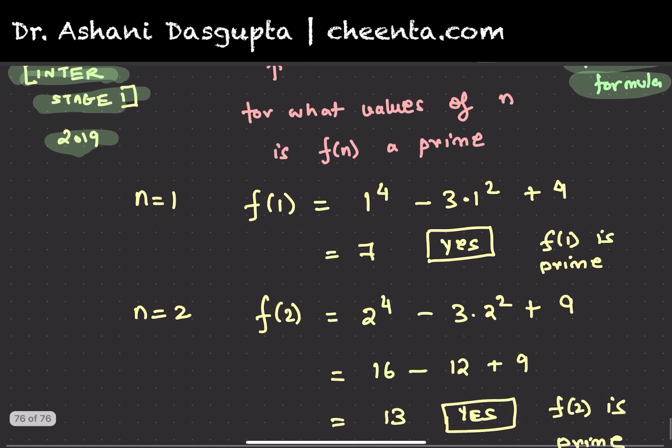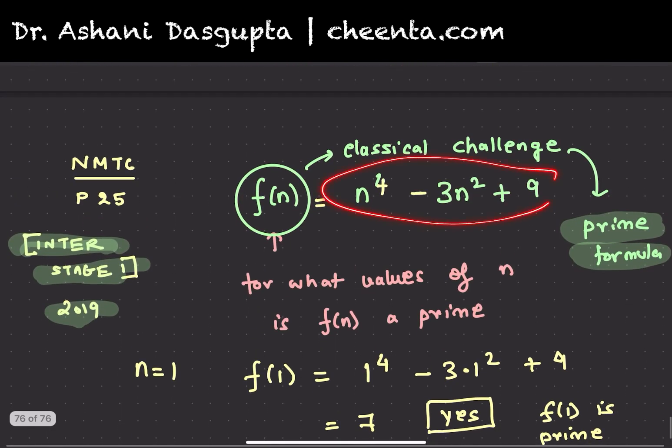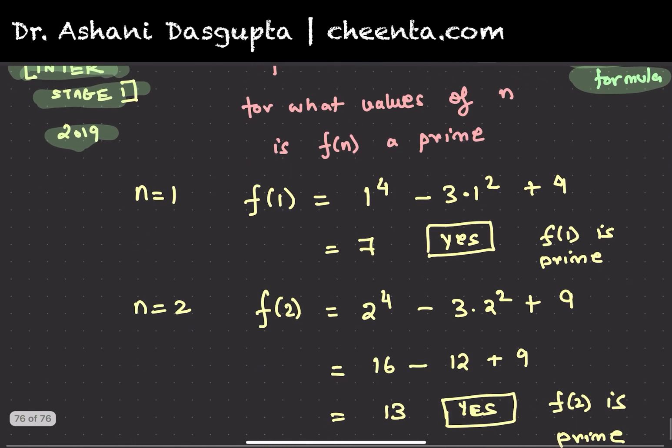There is no such polynomial which spits out only prime numbers when you plug in natural numbers. But this is probably one of the easy candidates which works for n = 1, n = 2. It's kind of fun in that way if you know the historical context.